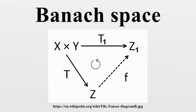A Banach space is a vector space X over the field ℝ of real numbers, or over the field ℂ of complex numbers, which is equipped with a norm and which is complete with respect to that norm. That is to say, for every Cauchy sequence in X, there exists an element x in X such that — or equivalently — the vector space structure allows one to relate the behavior of Cauchy sequences to that of converging series of vectors.